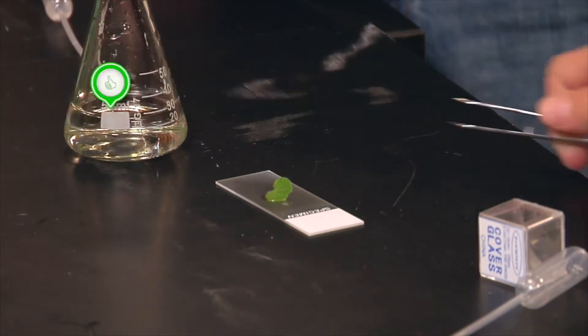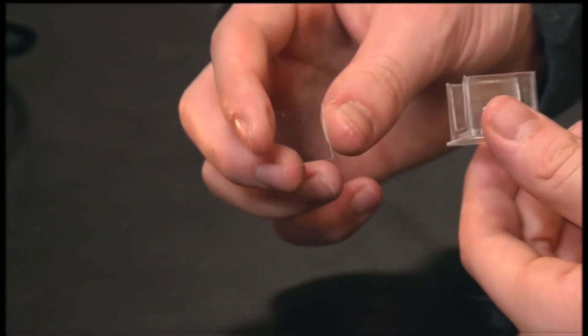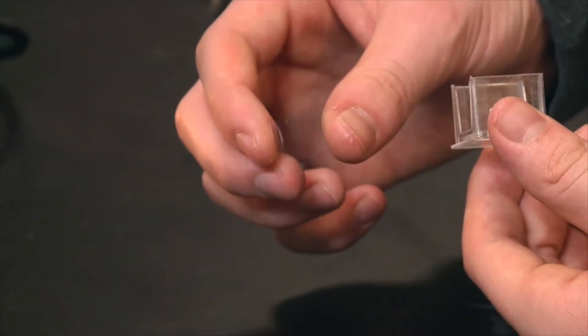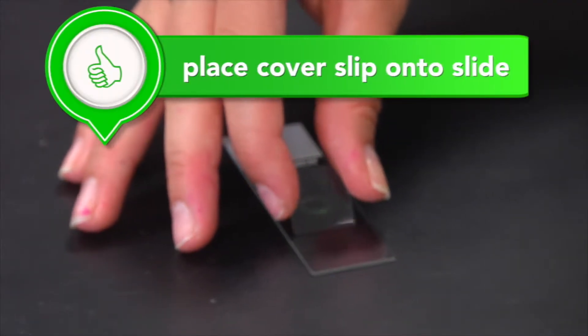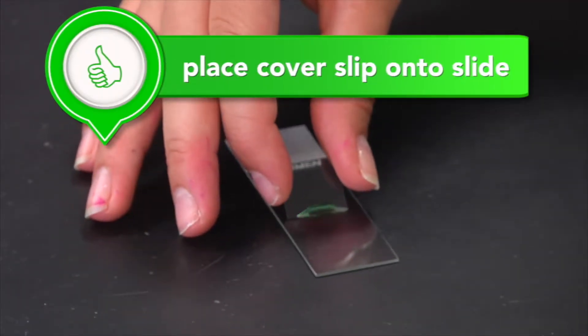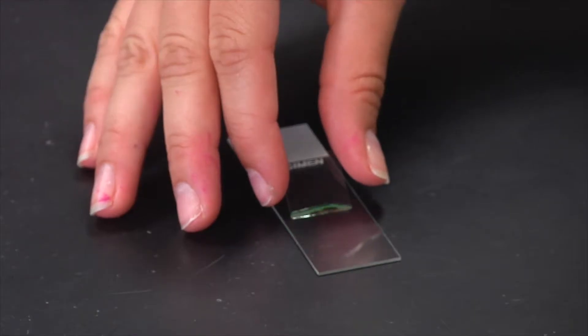Ideally, you should use forceps gently to handle the specimen. Next, take a cover slip, holding it by the sides again to avoid putting fingerprints on it. Touch one side of the cover slip to the microscope slide. Then allow the cover slip to drop on top of the specimen.